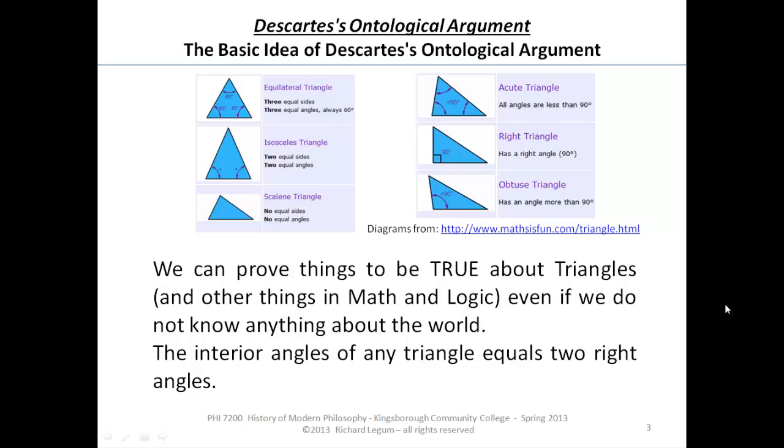Because Descartes, we said, is a rationalist, one of the continental rationalists. And when you think about continental rationalism, we're thinking about people who think that the paradigm of knowledge, the ideal that knowledge follows, is the mathematical paradigm. It's going to work the way mathematics does.